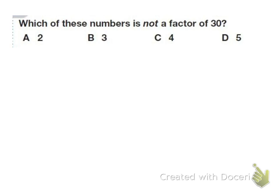So it says which of these is not a factor of 30? Well, I know 2 is a factor of 30 because 30 is even. 3 is a factor of 30 because I know that 3 times 10 is 30. So it can't be that. 5 I know is a factor of 30 because it ends in 0. So the answer has to be 4.